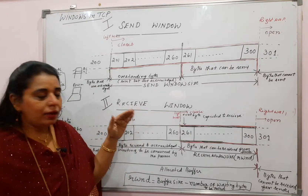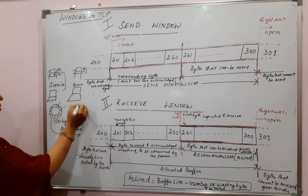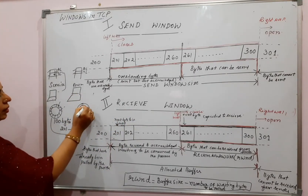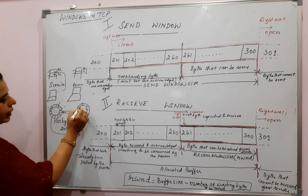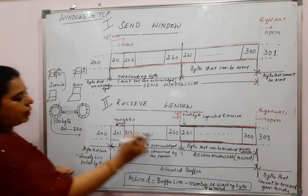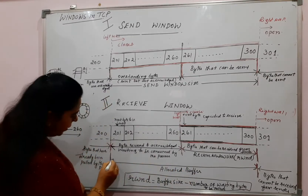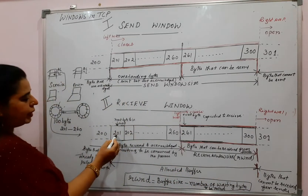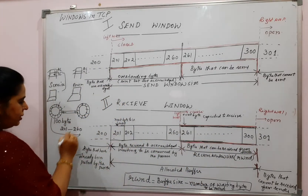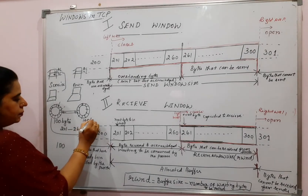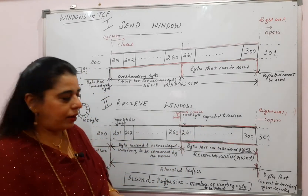Now for the receive window size — I am using the same byte numbers to explain the receive window. At the receiver, a buffer is also maintained. Whatever bytes come from the sender get stored in this buffer. The allocated buffer is from byte 201 to 300 — also 100 bytes. In this 100 bytes, you have to see the different categories of bytes.